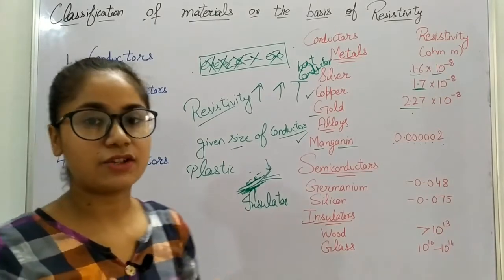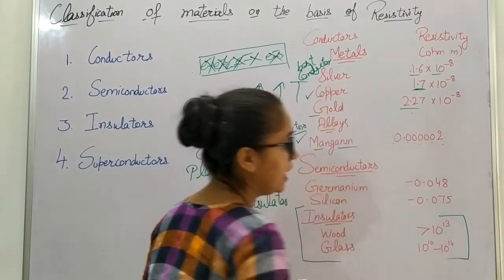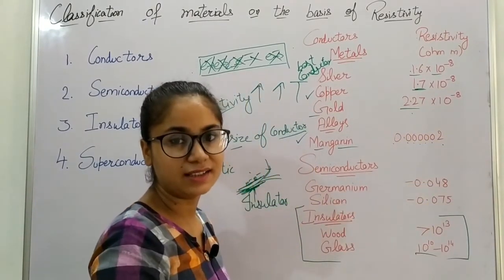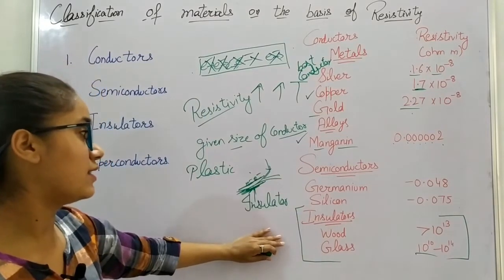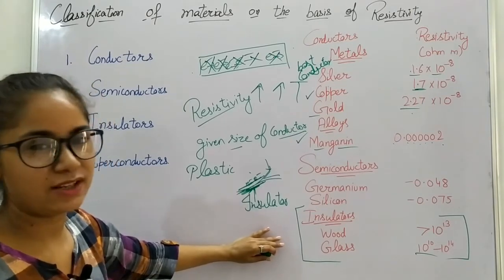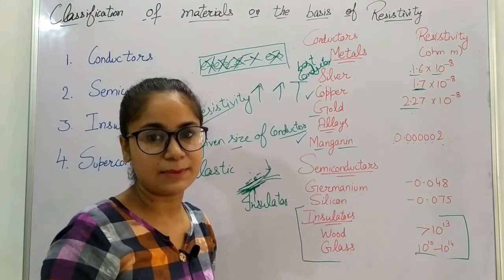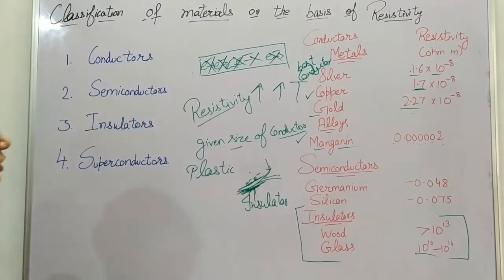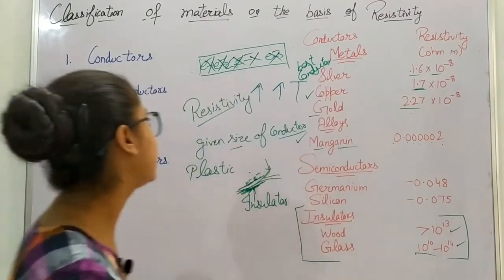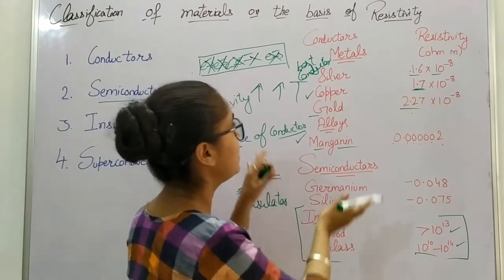Insulators do not allow the flow of electrons because they have really high resistivity — much higher than conductors. The resistivity of insulators decreases with increase in temperature, but if we keep increasing the temperature they would start melting, so we cannot increase the temperature indefinitely. That's why they behave this way — their resistivity is too high.